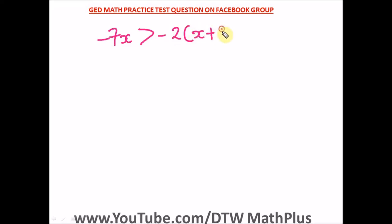Hello, welcome to DTW Math Plus. Today I have a question from a Facebook group asking to solve this particular inequality: negative 7x greater than negative 2 times bracket x plus 15, close bracket, then less than 10.